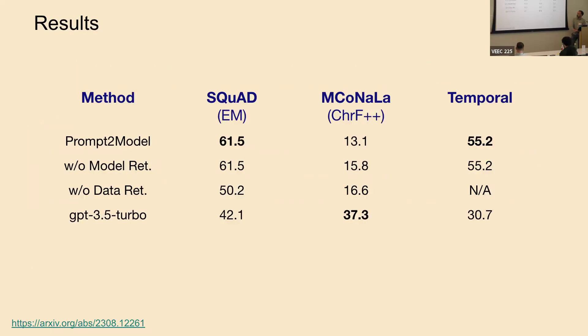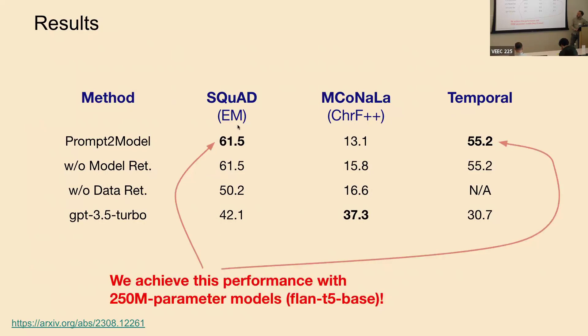So results. We have Prompt2Model, our full system up here, and then we have ablations without model retrieval and without dataset retrieval, where we just took the most popular model and most popular data or just generated data. We compare with GPT-3.5 Turbo, which was our teacher model. We can see that actually compared to GPT-3.5 Turbo with our best system, we're able to exceed its results. A lot of this lift is from our dataset generation and stuff like this. Some of it is just because there are good models on Hugging Face that can solve these problems reasonably well if you give them a little bit of a boost.